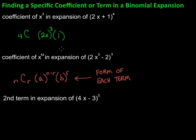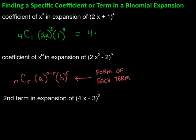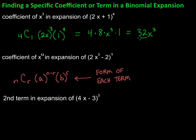We want x cubed, so we need that exponent on a to be 3. Since these two exponents have to add up to 4, the exponent on b has to be 1, which means r is 1. Now we calculate: 4C1 is just 4. Then we have 4 times (2x)³. Applying the third power: 2³ is 8, giving us 8x³. Times 1 to the first is just 1. So 4 times 8 times 1 is 32x³, and the coefficient is 32.